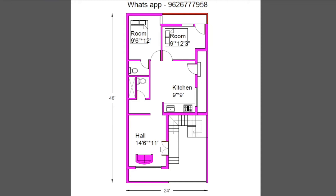Next is the hall size: 14 feet by 7 feet. In the hall there is one window. This is the sofa set placement area. We can place the TV here in the hall.